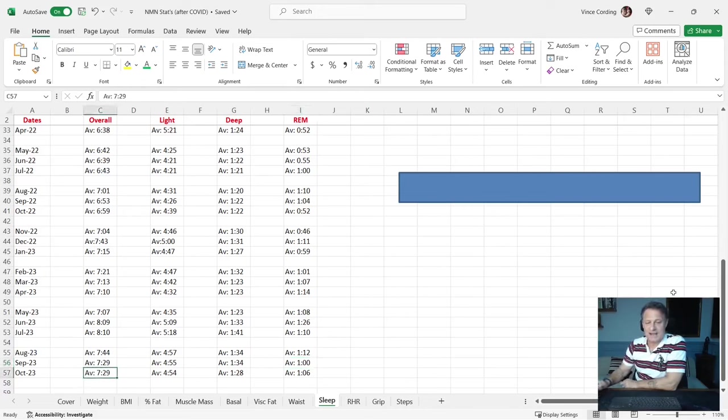For October, my average overall was seven hours 29. So again, that's good between seven and eight hours, which is what I'm looking at. Light sleep was four hours and 54. My average deep was one hour and 28. And my average REM was one hour six.